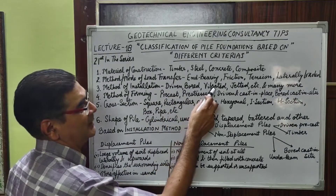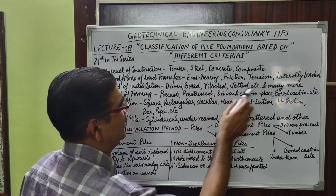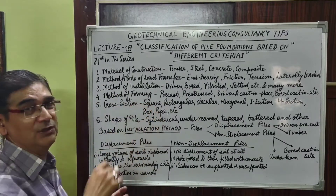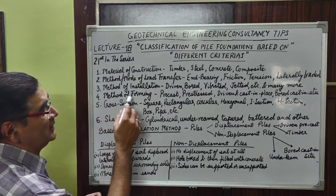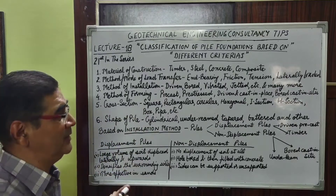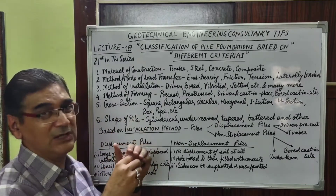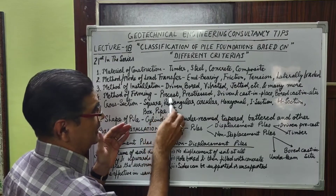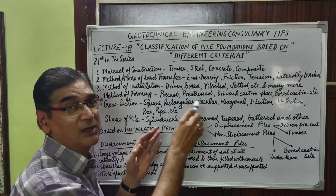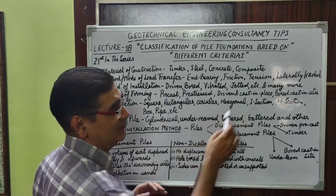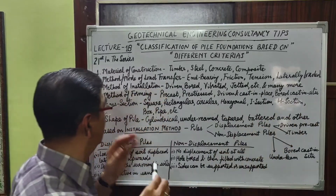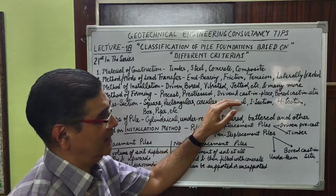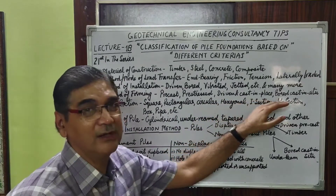The third criterion is the method of installation. The pile may be driven, molded, vibrated, or jetted, and you can name the pile by its method of installation. The fourth criterion is the method of forming — whether the concrete used is precast, prestressed, cast-in-situ driven and cast in place, or bored cast-in-situ.